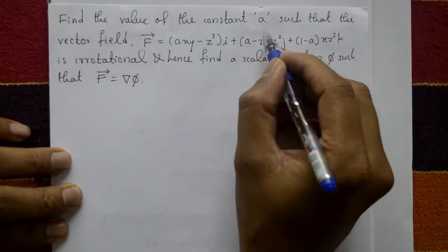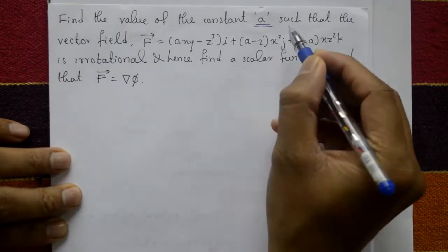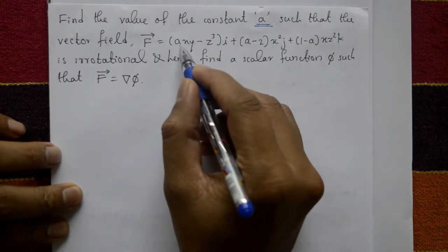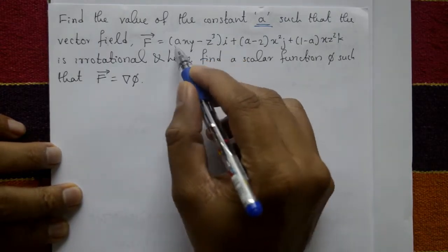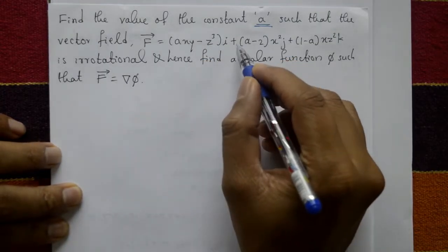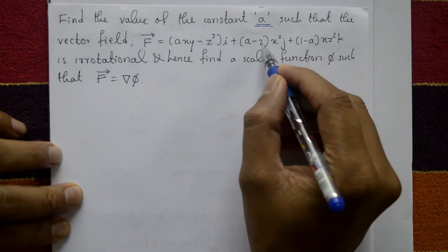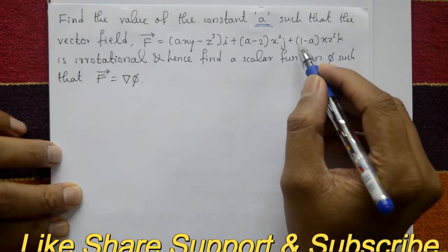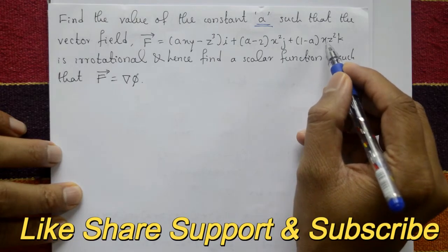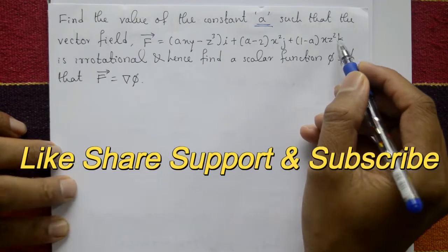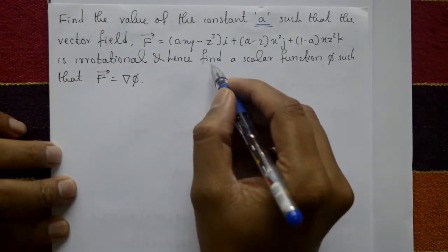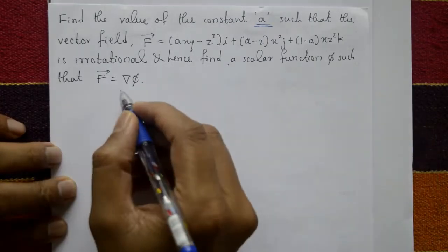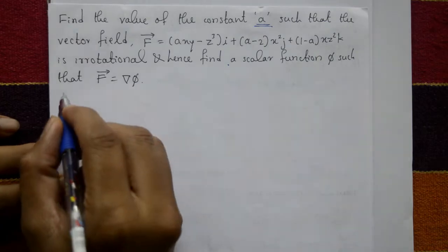Find the value of the constant a such that the vector field f equals (axy minus z cubed)i plus (a minus 2)x squared j plus (1 minus a)xz squared k is irrotational, and hence find a scalar function phi such that f equals del phi.